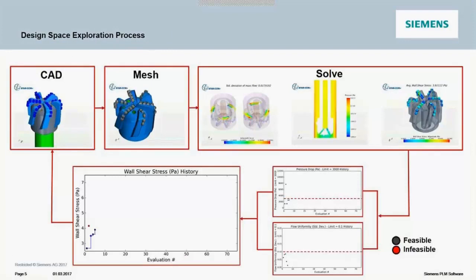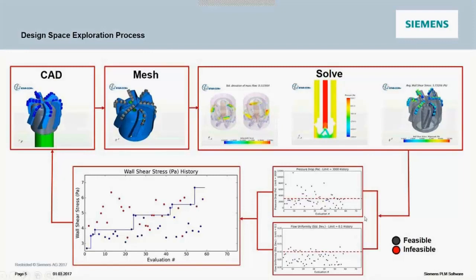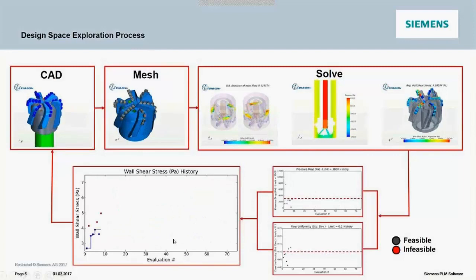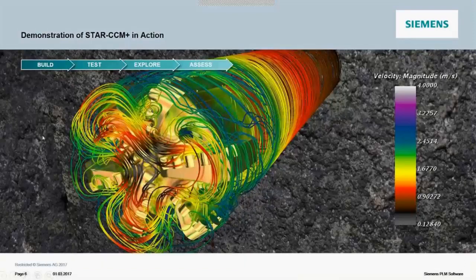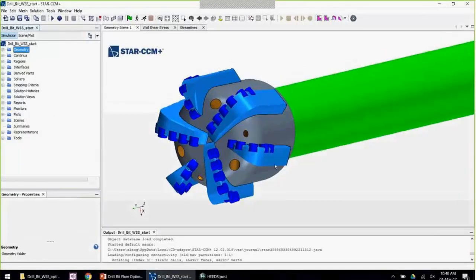Ultimately we want an automated process where the optimizer can alter the CAD design, regenerate the mesh for the CFD calculation, rerun the solver, and re-extract all of the reports and visual post-processing. It will compare against the constraints, measure the wall shear stress result, and complete the loop by readjusting the CAD and rerunning. I'm now going to show how that can be done using Star CCM Plus. Here is the drill bit model already set up — we already have a flow solution computed, showing wall shear stress on the cutting teeth. We can take a look at streamlines to see how flow passes around the bit.